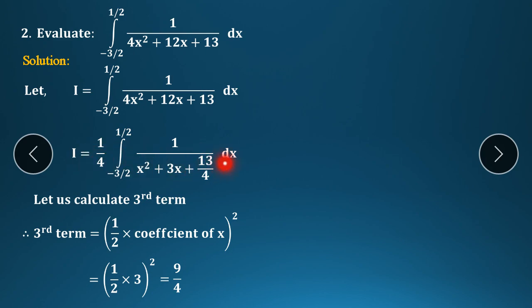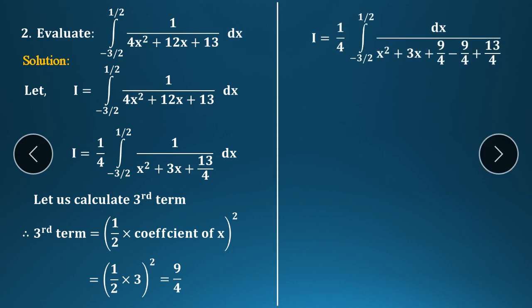So: third term = (1/2 × coefficient of x)². The coefficient of x is 3, so: (1/2 × 3)² = (3/2)² = 9/4. The third term is 9/4. Now add and subtract 9/4 in the denominator expression: x² + 3x + 9/4 − 9/4 + 13/4.